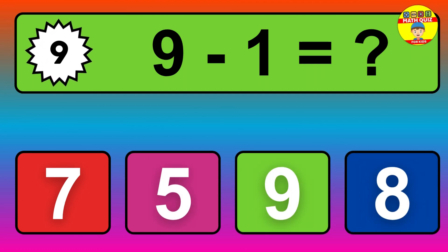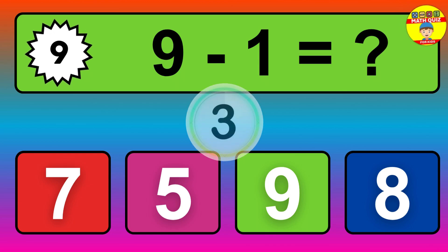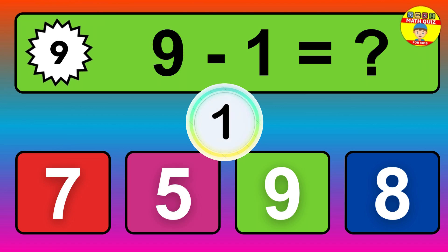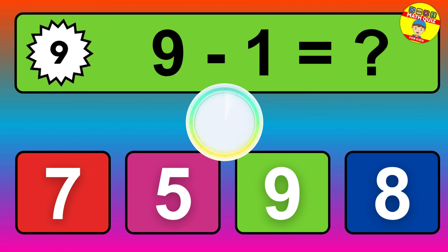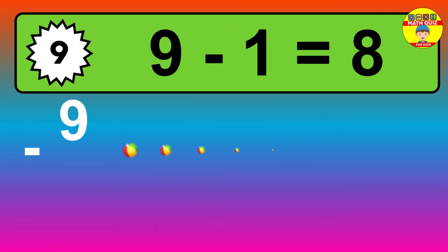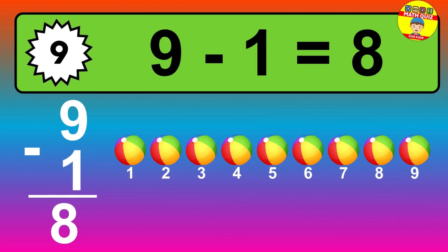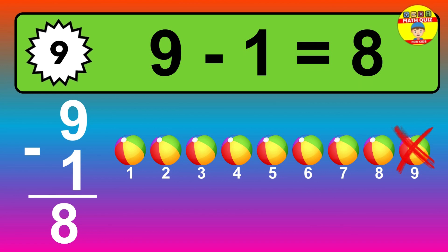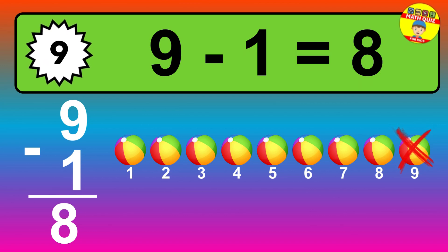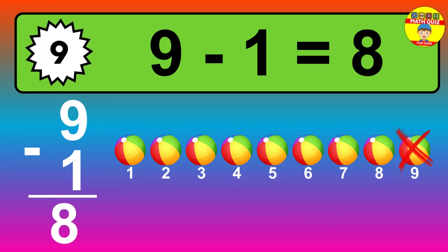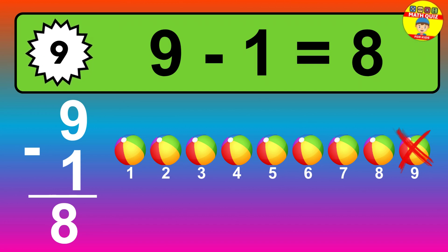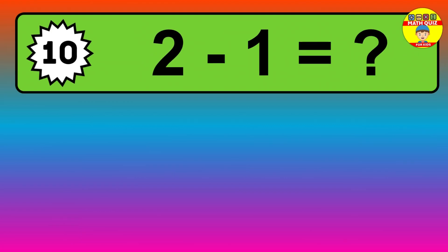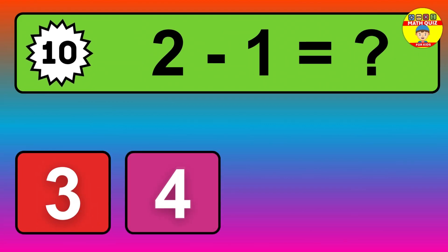Question nine: nine minus one equals what? So the answer is nine minus one is eight. Let's count it: one, two, three, four, five, six, seven, eight.